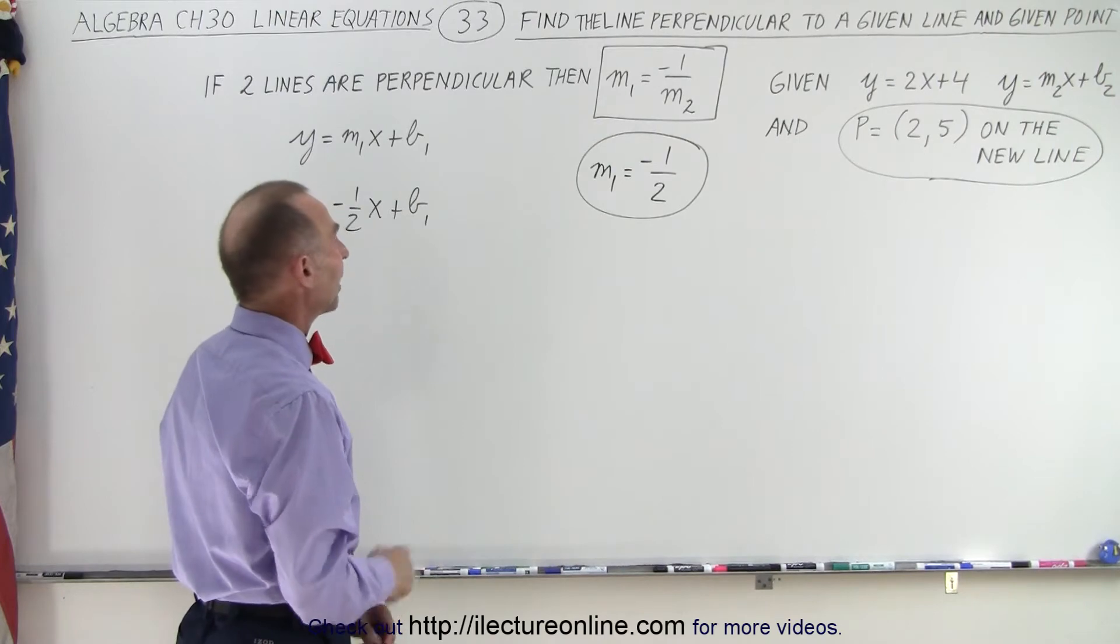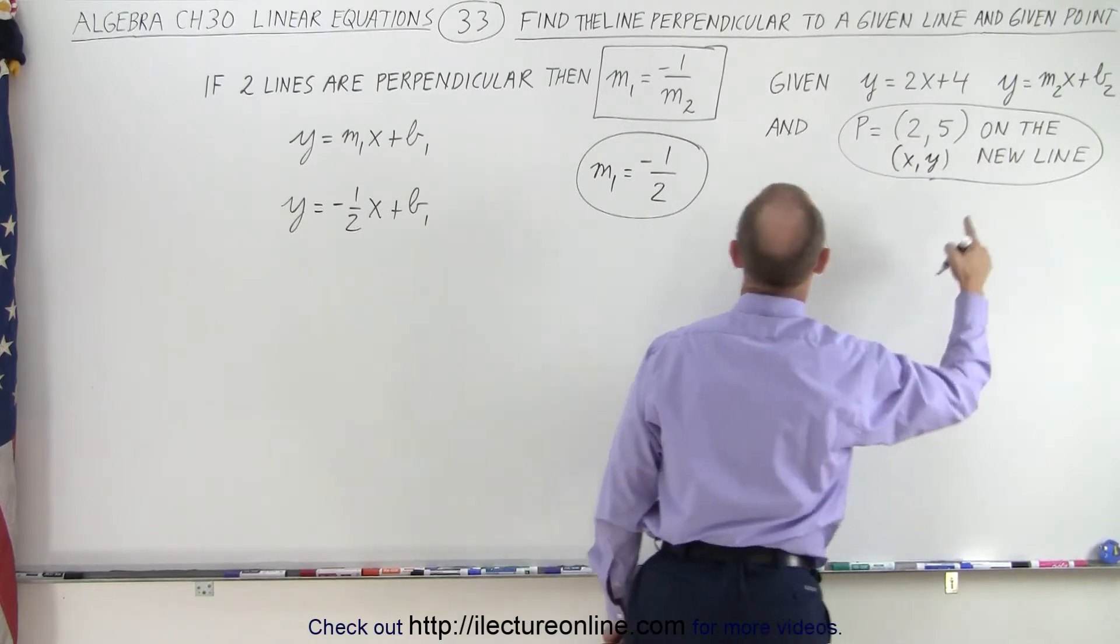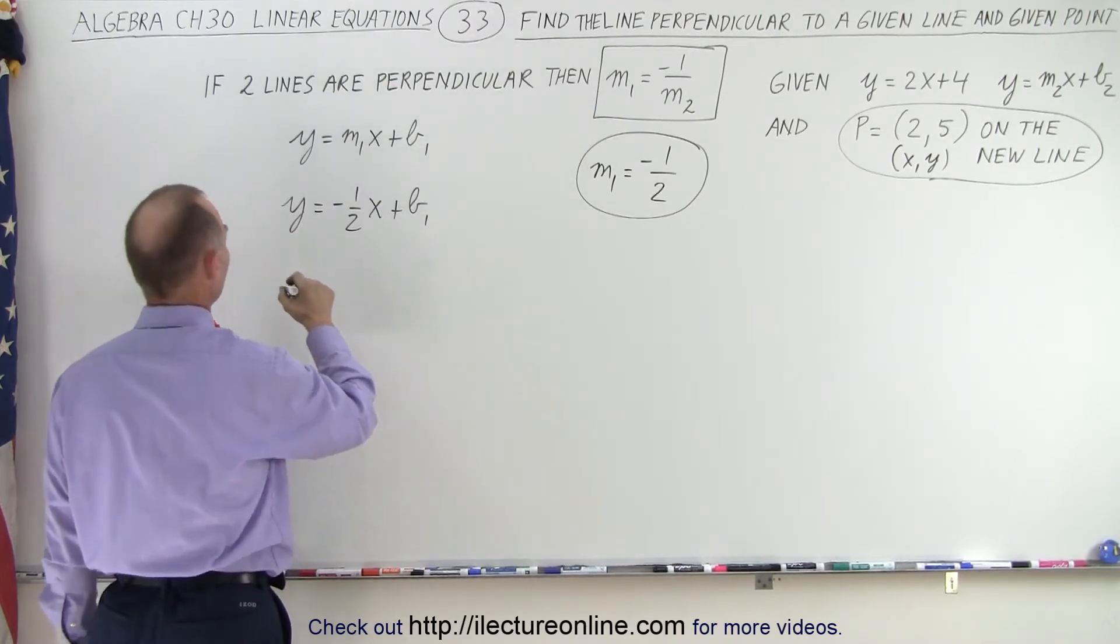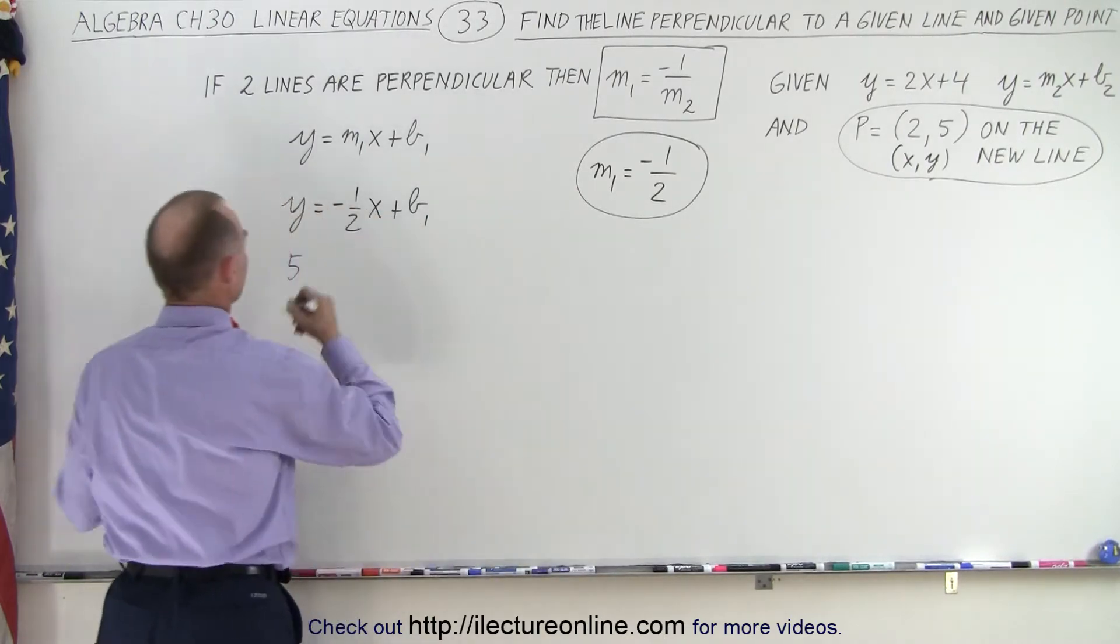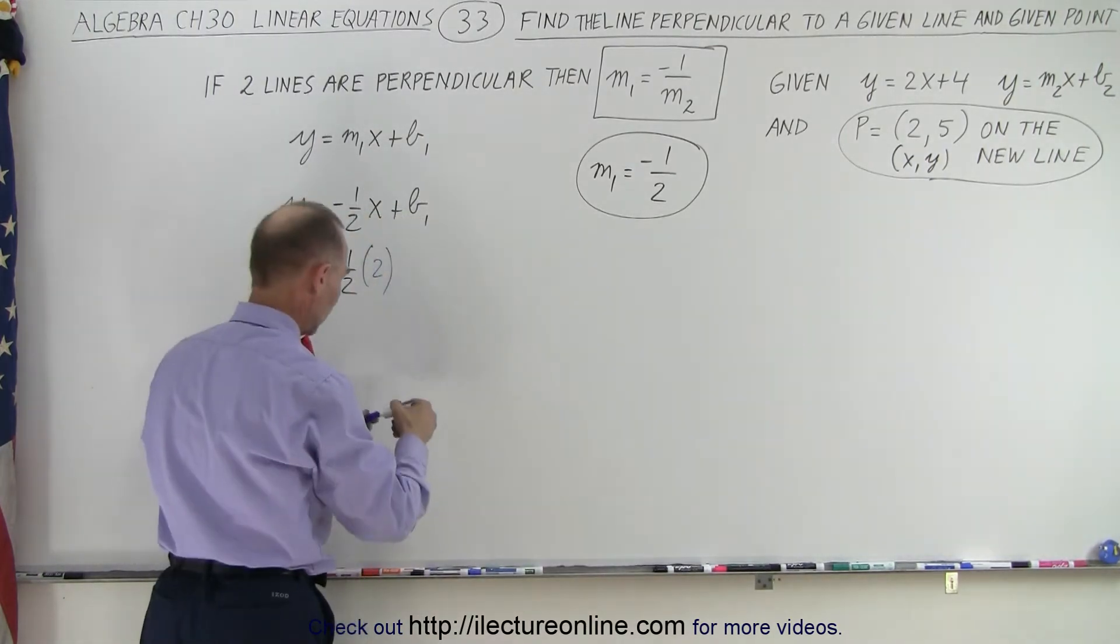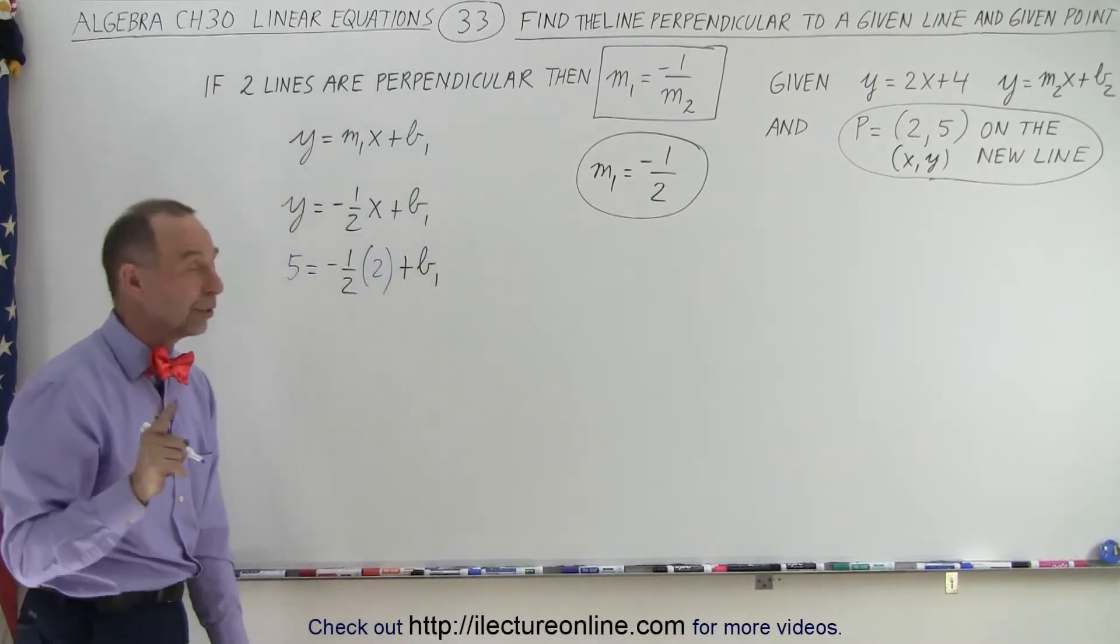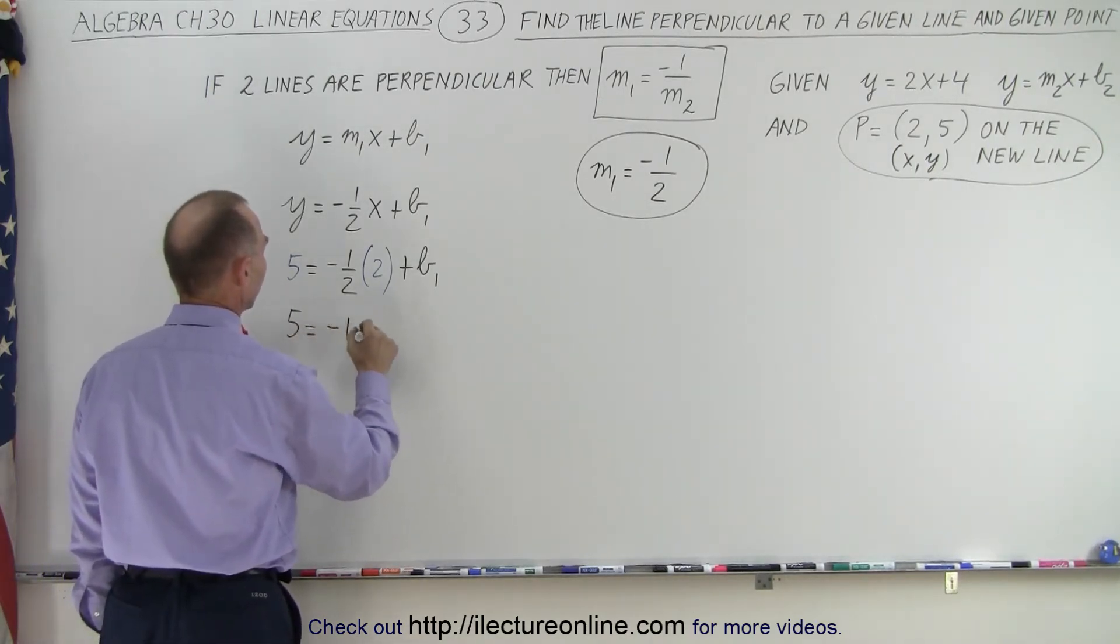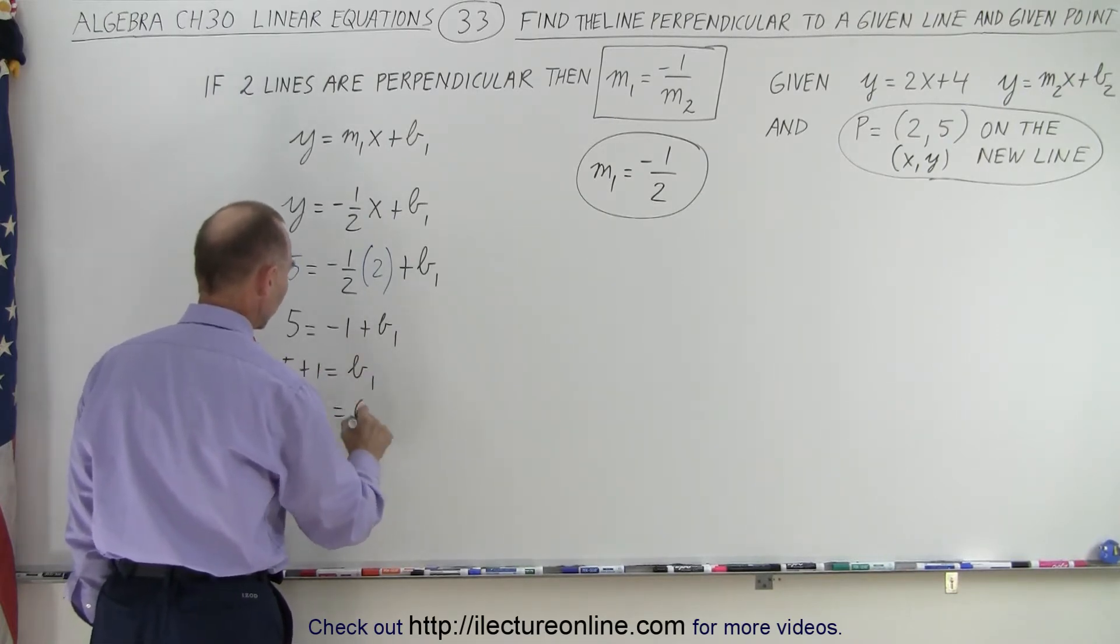Okay, if that point is on the line, how do we find it? Well this is the x and y coordinate at that point, so let's plug that into the x and y value over here. x is equal to 2, y is equal to 5. So here we have 5 is equal to minus 1 half times x, and x is equal to 2, plus b1. Now we're able to solve for that specific point where the new line we're looking for crosses the y-axis. This becomes 5 equals negative 1 plus b1. Move that across, we get 5 plus 1 equals b1, or b1 equals 6.